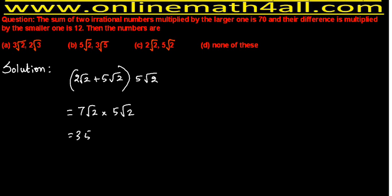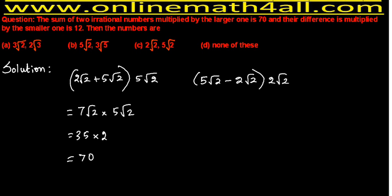Calculating: 7√2 × 5√2 = 35 × 2 = 70. We get 70, matching the first condition. Now checking the second condition: the difference (5√2 − 2√2) = 3√2, multiplied by the smaller one, 2√2: 3√2 × 2√2 = 6 × 2 = 12. We get 12, which matches the second condition. Both conditions are satisfied, so Option C is the correct answer.